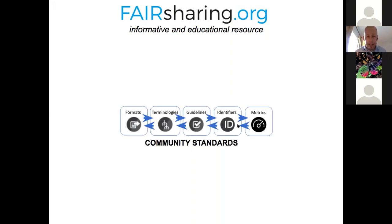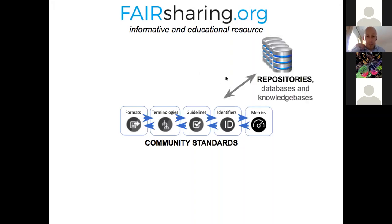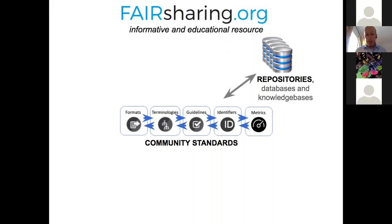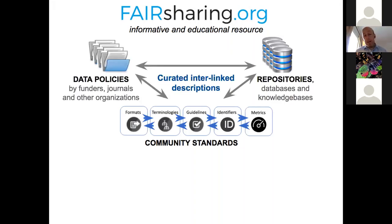All of these standards are collated and related to each other. A reporting guideline may stipulate the use of a particular format, so the blue arrows here indicate how standards relate to each other. We then relate them to other records in FAIRsharing for repositories, databases, and knowledge bases that implement those standards — so you can ask: my data is in this format, which repository accepts it? My data is on this subject, which repositories accept data on this subject?